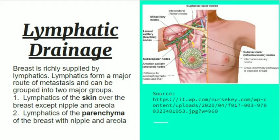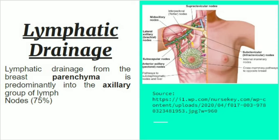The breast is richly supplied by lymphatics, which are important because breast cancer spreads via lymphatics. The lymphatics can be divided into two major groups: one group drains the skin over the breast except the nipple and areola, and the second group involves the nipple, areola, and parenchyma of the breast. Lymphatic drainage of the breast parenchyma drains predominantly into the axillary group of lymph nodes, accounting for about 75 percent of drainage.